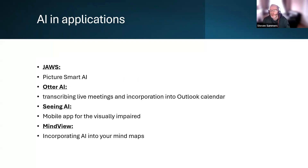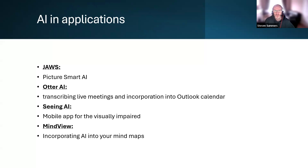We've all heard of apps like ChatGPT, Copilot, Grammarly, and so on. Four short videos will be shown of AI being used in applications you might not have come across before, with the possible exception of MindView. The videos range from two to four minutes long, and all the applications are DSA-approved. Seeing AI is a free application for mobile phones.